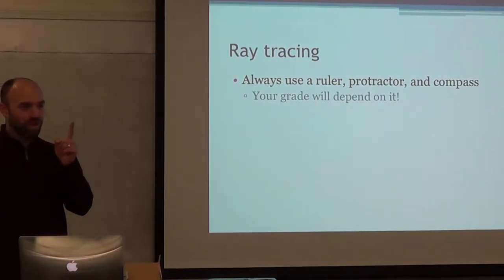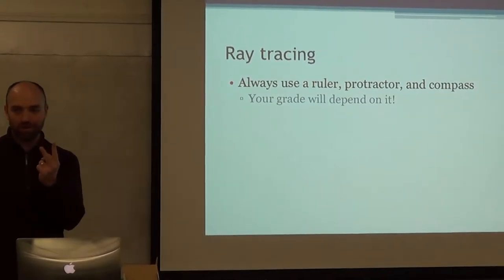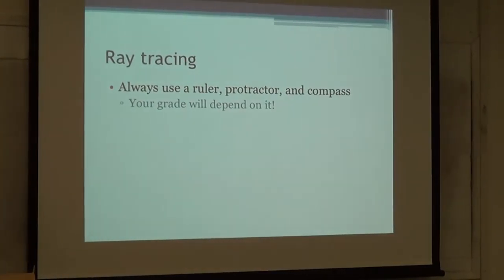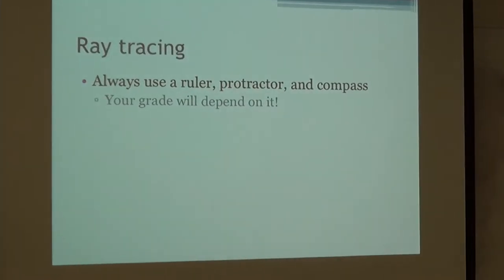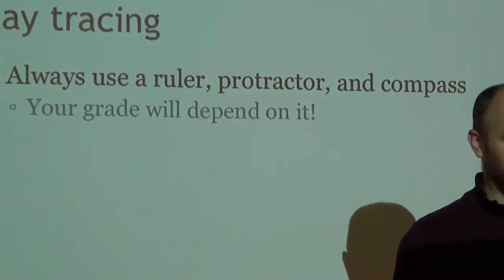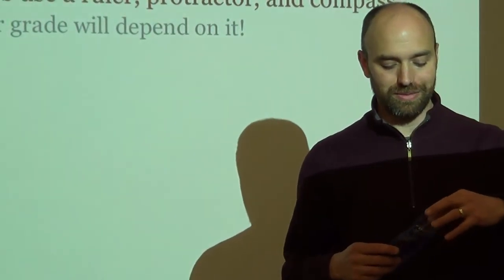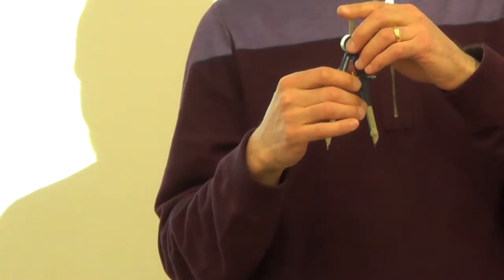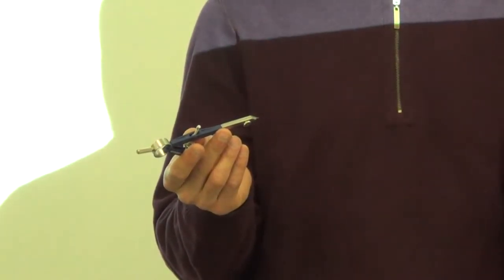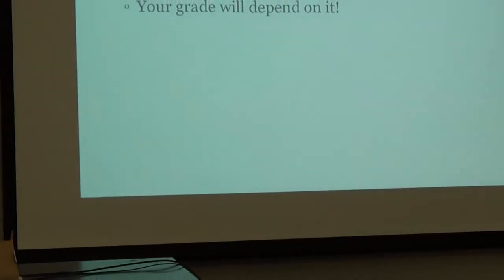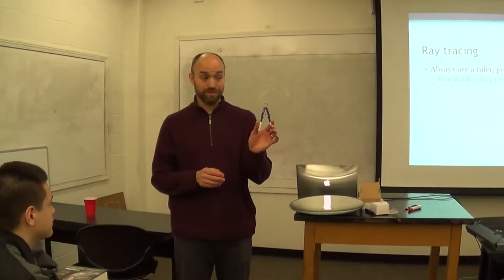Here are the rules with ray tracing: you must always use a ruler, a protractor, and a compass. What's a compass? It could mean the magnetic one pointing north, or it could mean this kind — the drawing kind with a pointy end and a drawing end that you can adjust the angle on. If you don't have a compass, which not everybody does, everybody usually has a ruler and protractor. You can probably find a compass at Walmart for about a dollar.